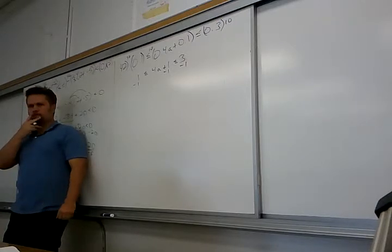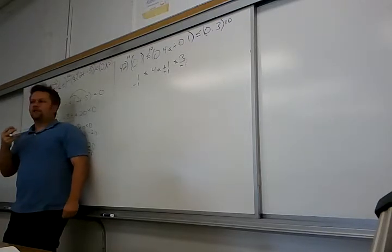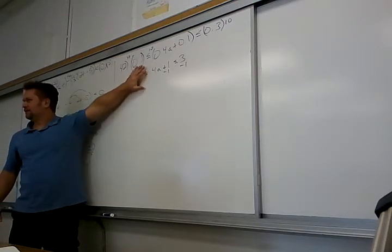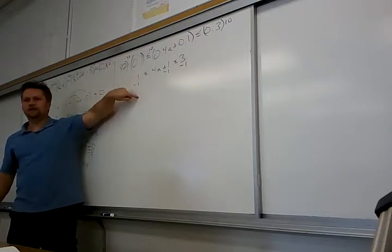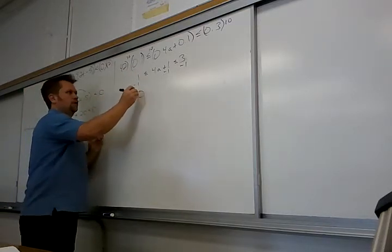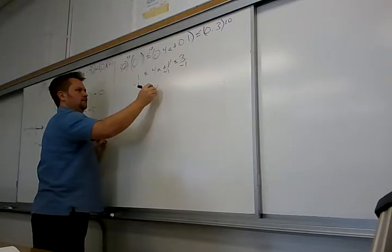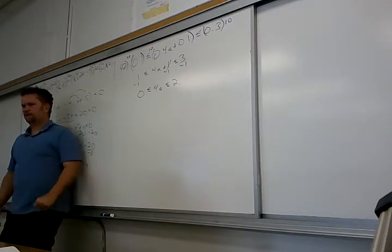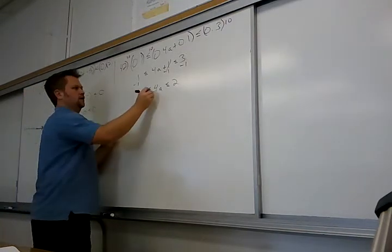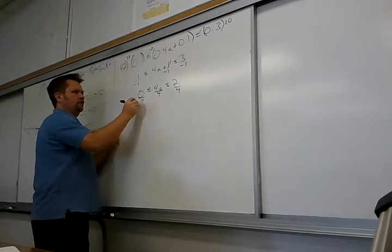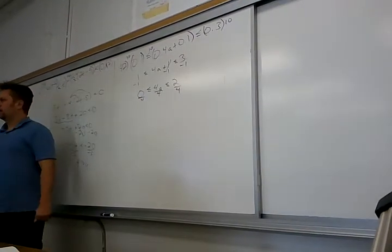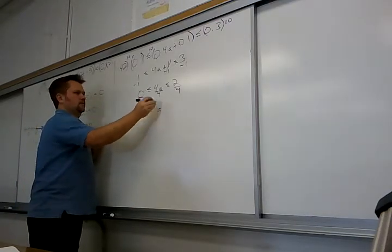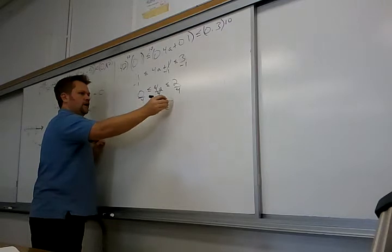Don't let anything distract you - you want to get A by itself. Focus on why it's not by itself. Subtract 1 from all three sides. What is 1 minus 1? Zero - it's a valid number, it has to be there. Zero is still there. So you get 0 less than or equal to 4A less than or equal to 2. Then divide everything by 4: you get 0 less than or equal to A less than or equal to one-half.